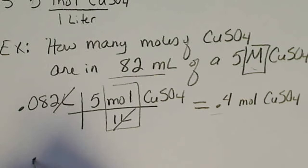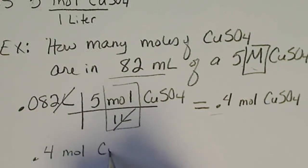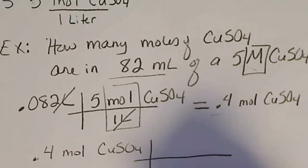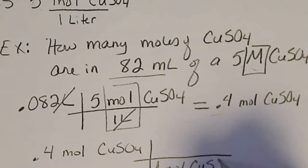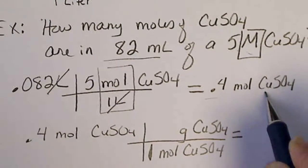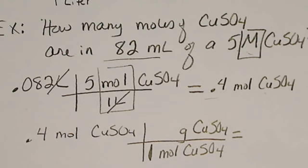If I wanted to see how many grams were in there, I could take 0.4 moles of copper sulfate, and then I could get out the periodic table and do the molar mass step. So one mole of copper sulfate weighs so many grams of copper sulfate. So once we have moles, we could calculate grams if we needed to.